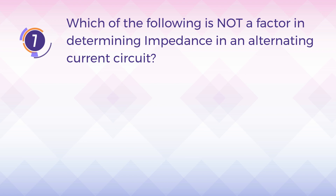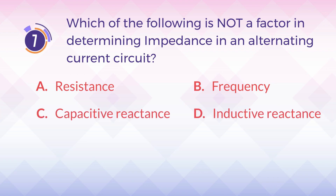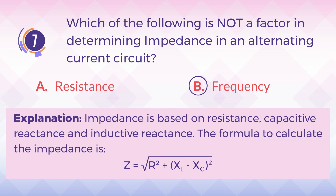Number seven: which of the following is not a factor in determining impedance in an alternating current circuit? A) resistance, B) frequency, C) capacitive reactance, D) inductive reactance. The correct answer is B) frequency. Explanation: impedance is based on resistance, capacitive reactance, and inductive reactance. The formula is: impedance equals the square root of resistance squared plus the difference of capacitive reactance and inductive reactance squared.